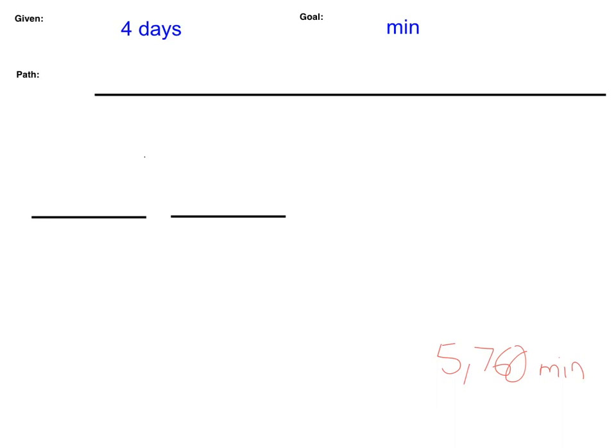For those of you that need extra help, let's go through and do this, because you know I can't get enough dimensional analysis. So in this case, we need to figure out our path. And this one actually is not using your conversion sheet — this is using conversions that you already know.